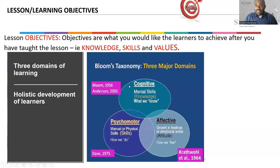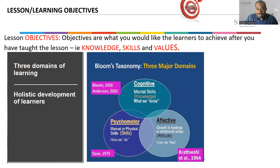For each lesson you plan, you must ensure there is constructive alignment. Constructive alignment is the link between your learning objectives, the assessment, and the content you are going to cover. You have to think about the objective of the lesson first and make sure that the objective is reflected in the assessment. You also need to ensure that the content you have covered is what you are going to assess.